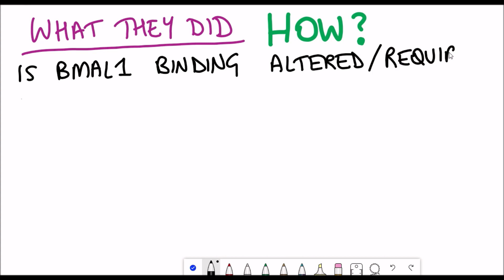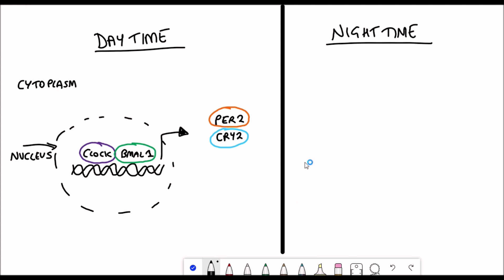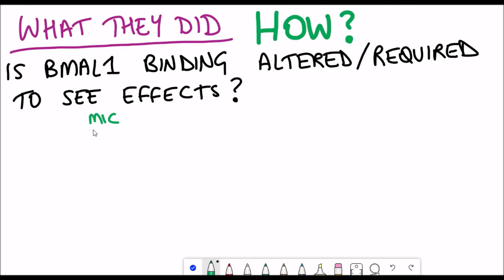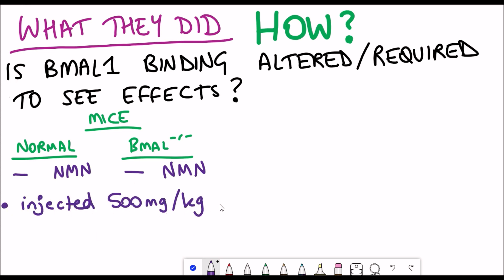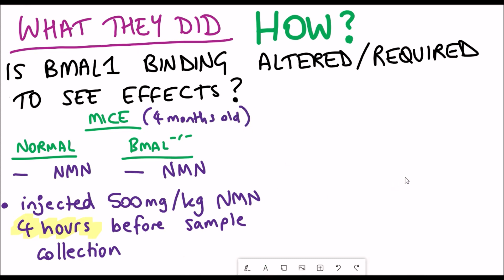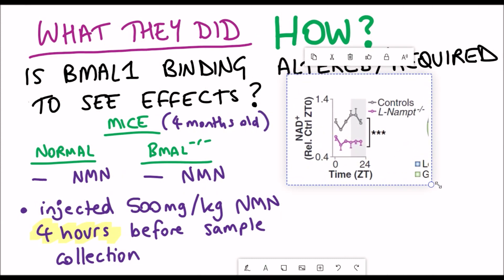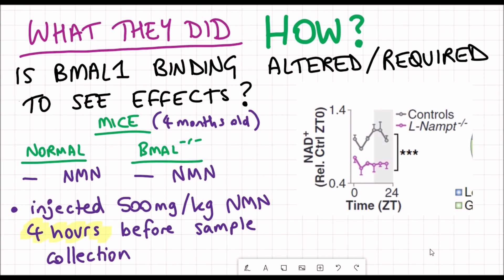One thing they were interested in is looking at the BMAL1 binding. BMAL1 is that transcription factor that binds DNA and regulates the expression. For these experiments, they used mice that were either normal or they had loss of BMAL1. This time, instead of using nicotinamide riboside, they used NMN or nicotinamide mononucleotide. They injected 500 milligrams per kilogram four hours before sample collection. So this time, it wasn't like the four months, it was more of an acute response to see what would happen.